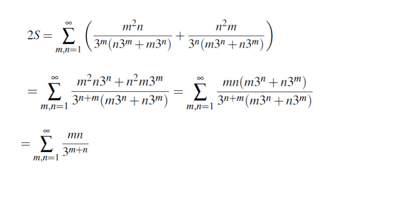So now how do we evaluate this sum? Let's first write this down as a double sum of m from 1 to infinity, n from 1 to infinity, mn over 3 to the power of m plus n. In the inner sum you can take out all of the terms with m outside.